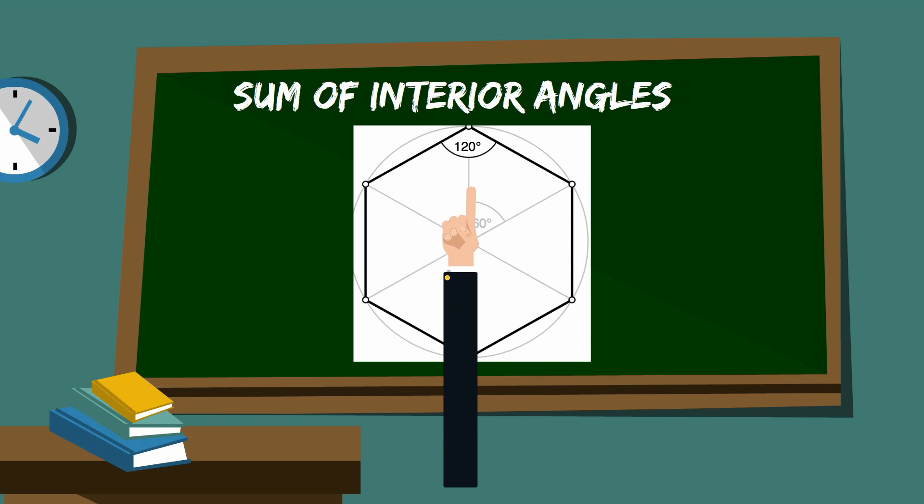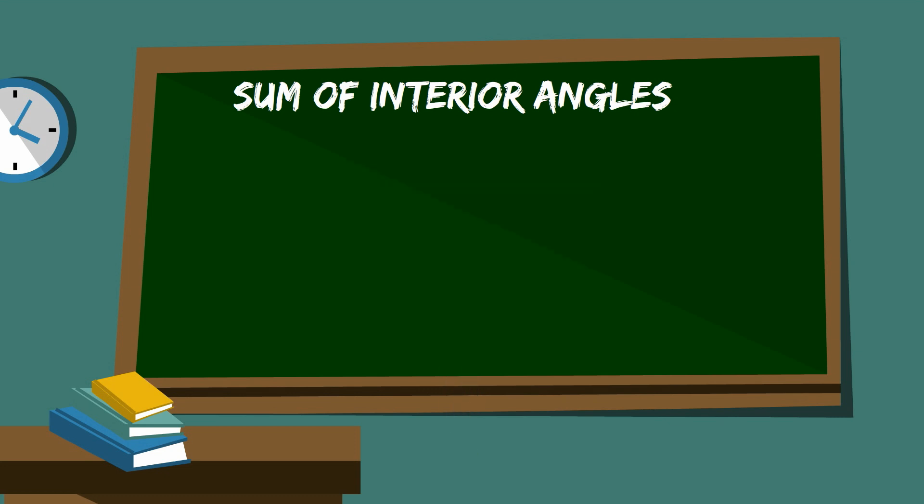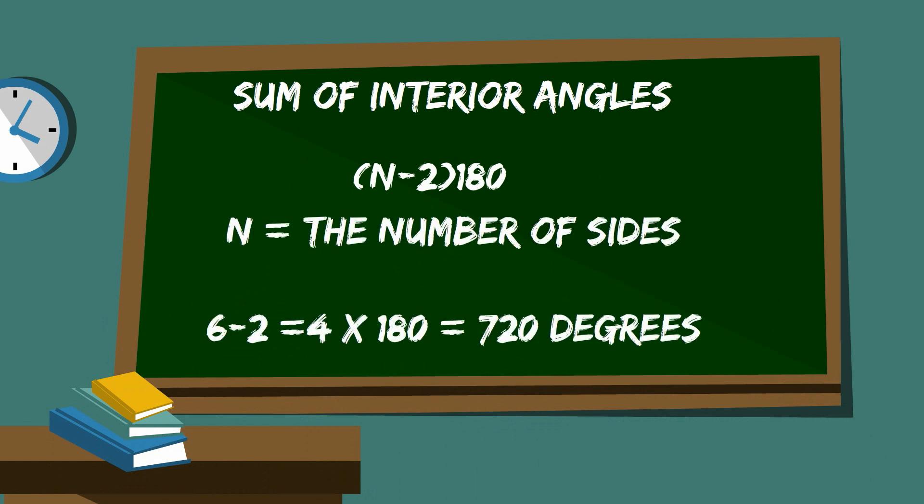The general formula for the sum of all the interior angles of a polygon equals in parentheses n minus 2 times 180, and n is the number of sides. So if you do the math, here is what it looks like.